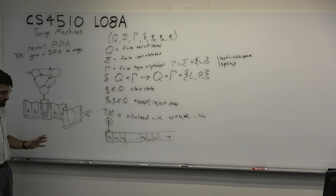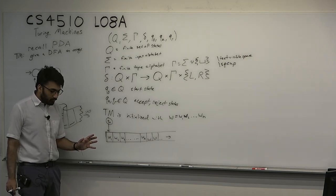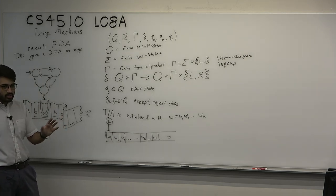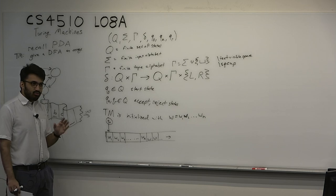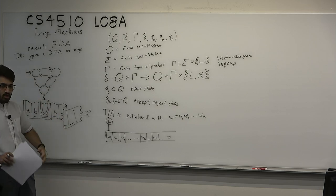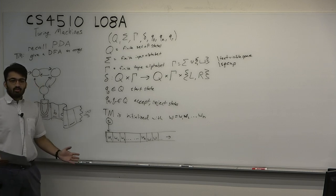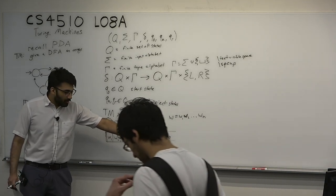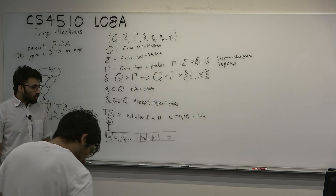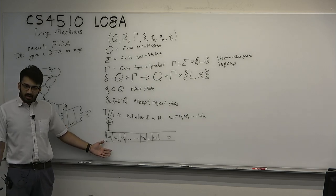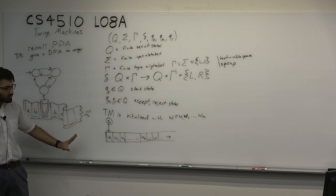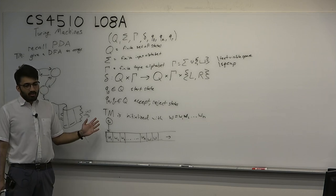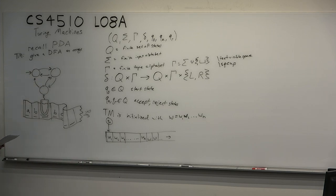Also, the DFA and the PDA had the input and could only read it left to right. Once they read it left to right, whatever they had previously seen, they were only allowed to store that in their memory structure; whatever they weren't able to store, they were forced to forget. Here the machine can keep the input there, maybe make a copy of it, and then continue computing. It's allowed to go back and check what it saw. This specific definition of a Turing machine is one of several variants we'll talk about.